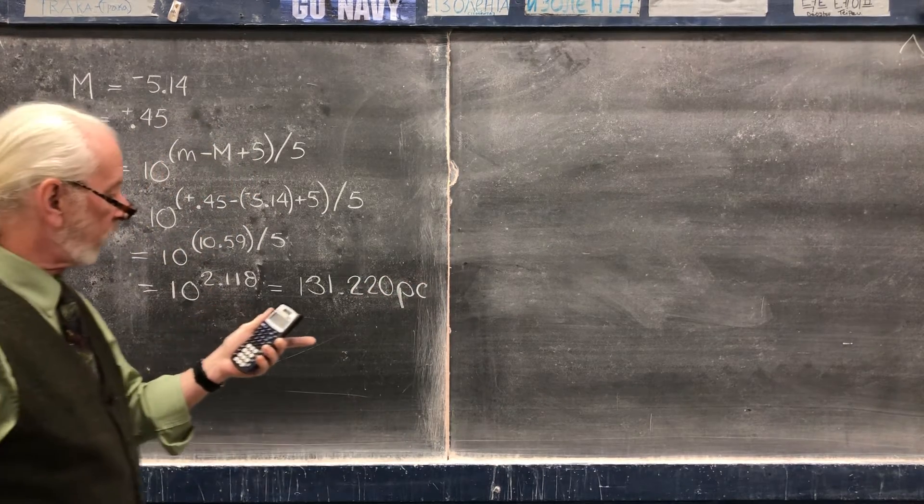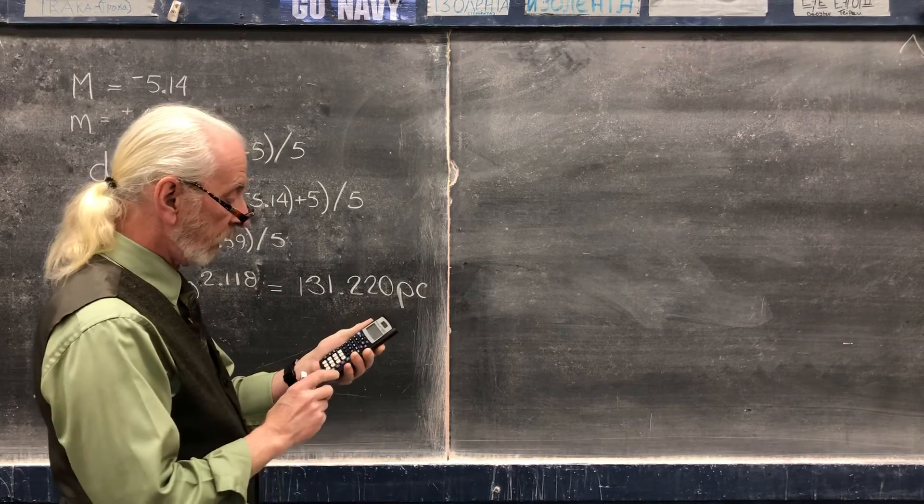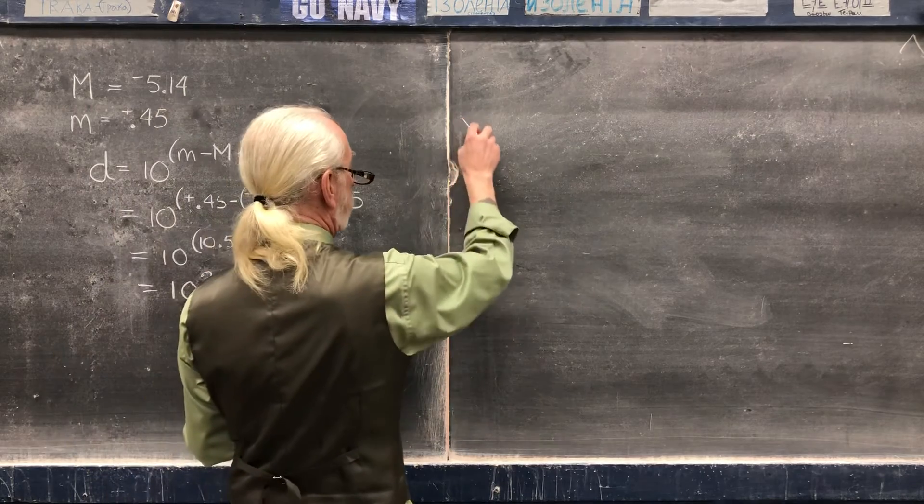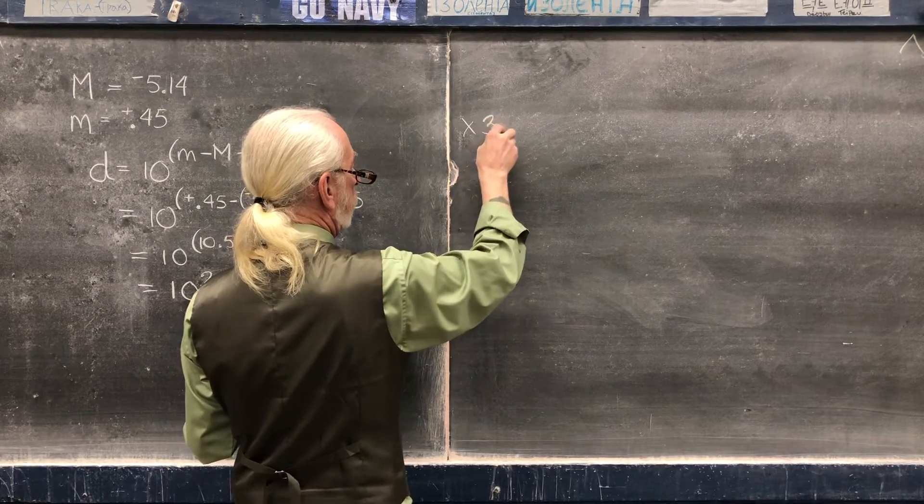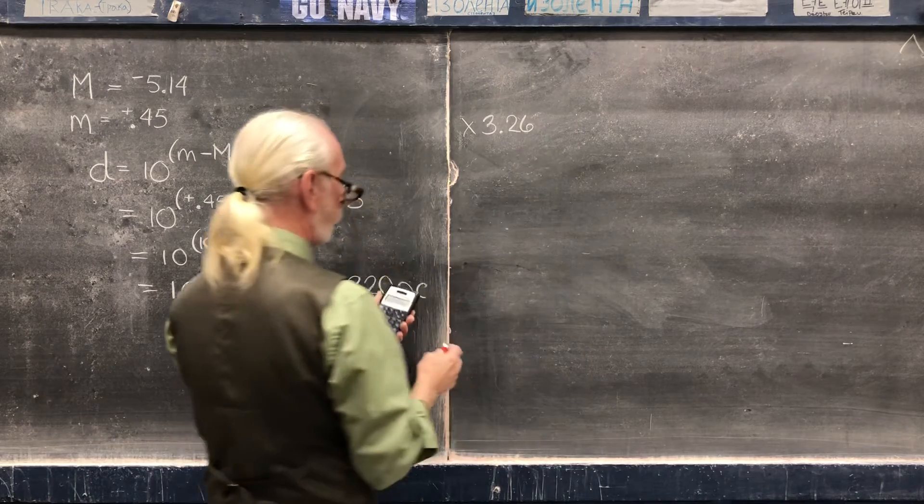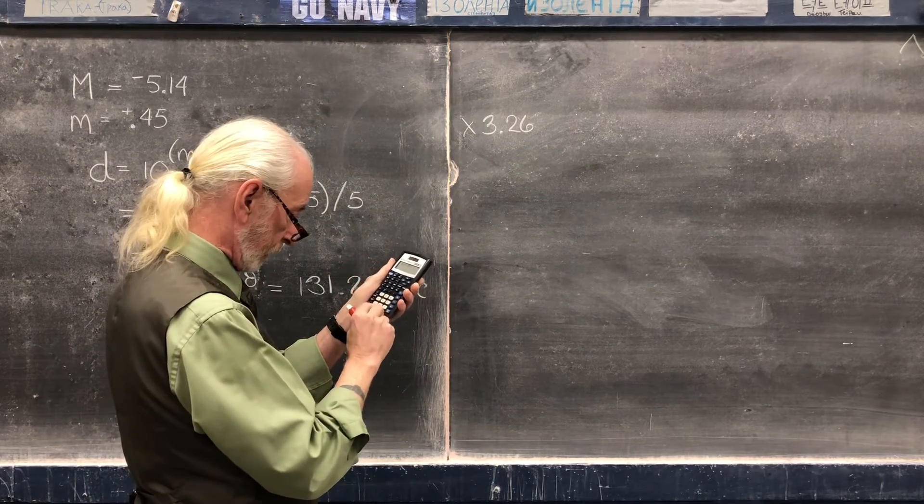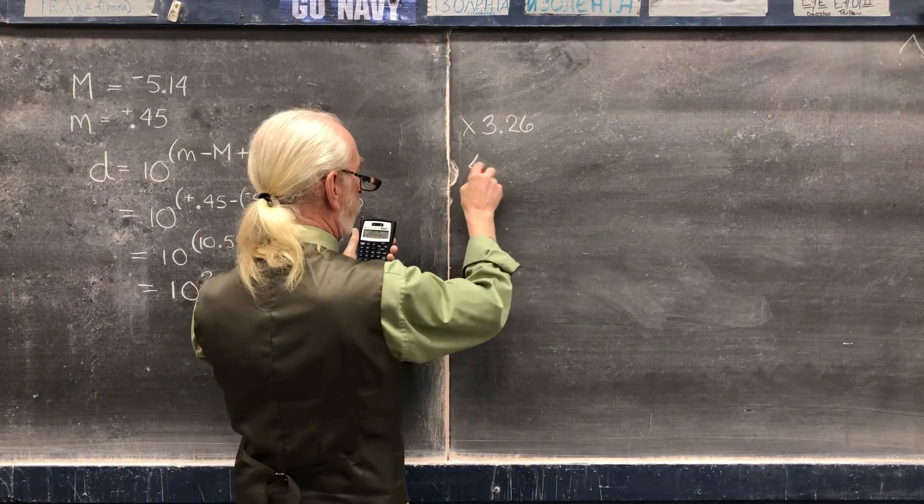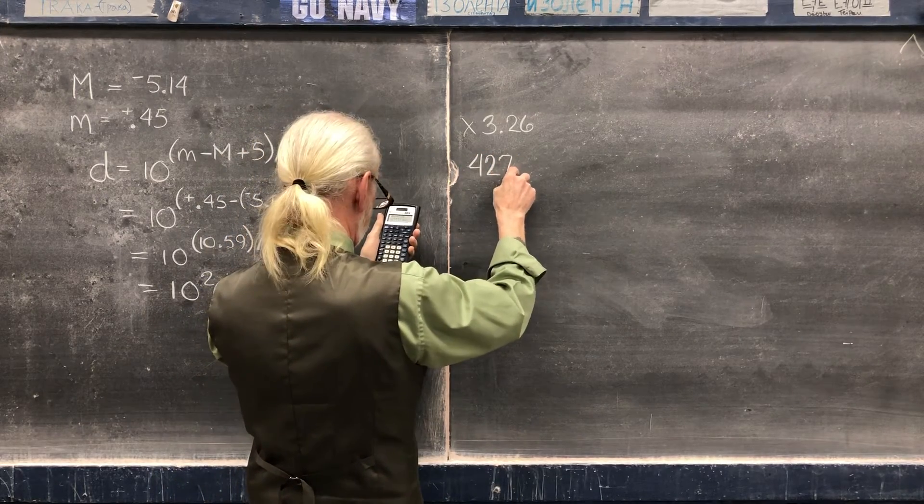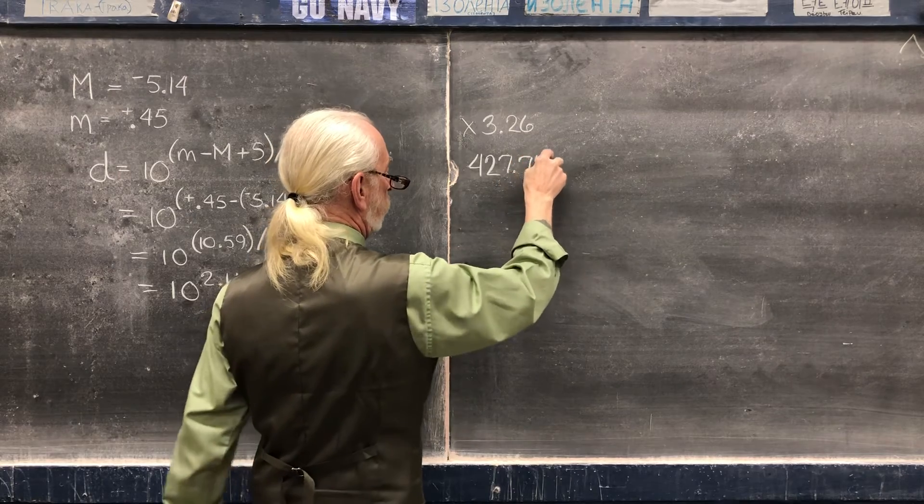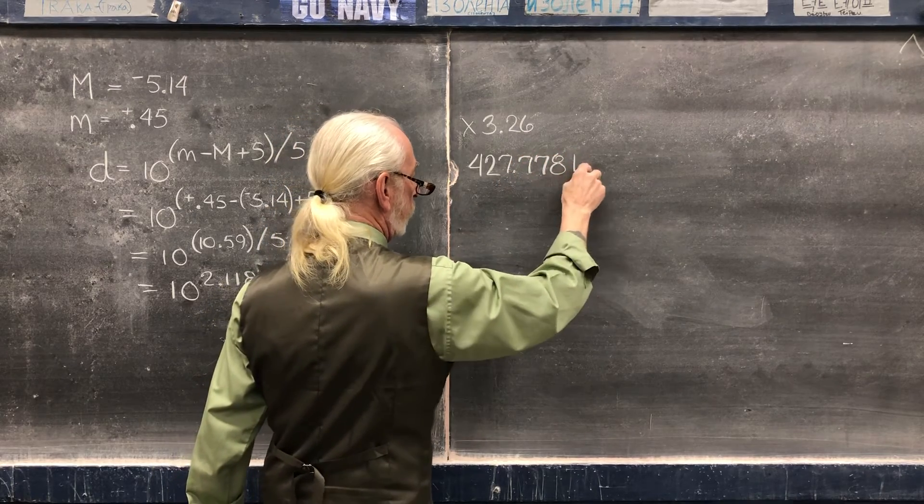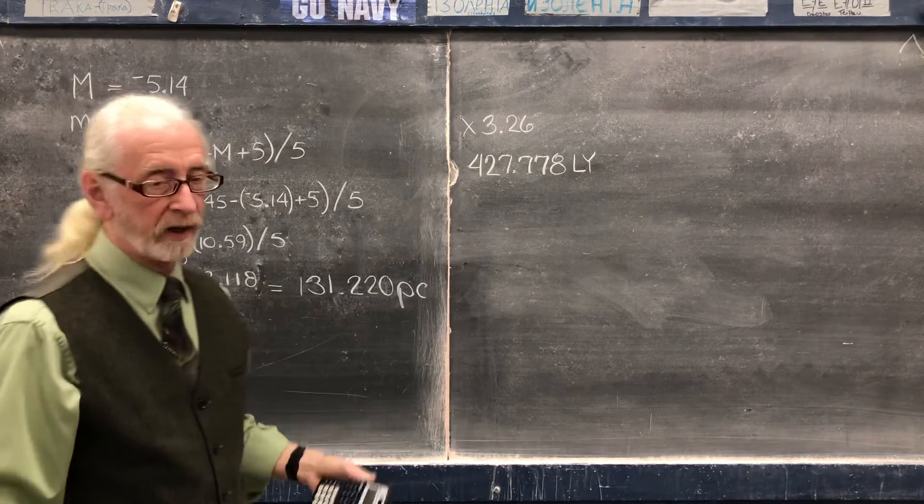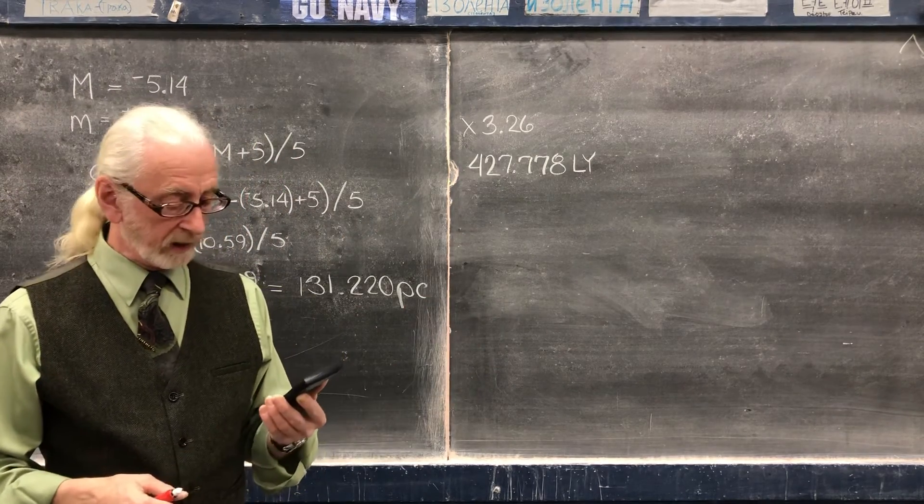And I'll convert that into light years by multiplying times 3.26. And there we have it. There's Betelgeuse, roughly 430 light years away, as we said at the beginning of the course.